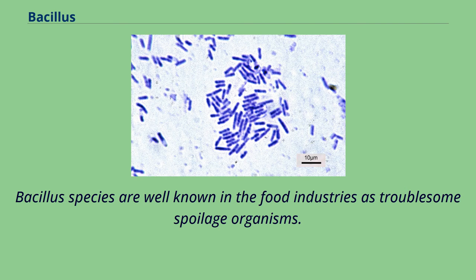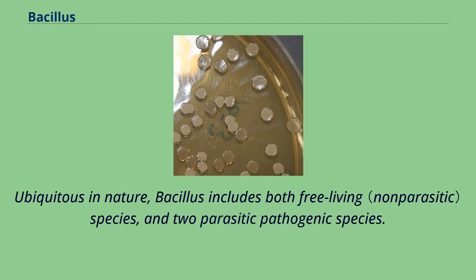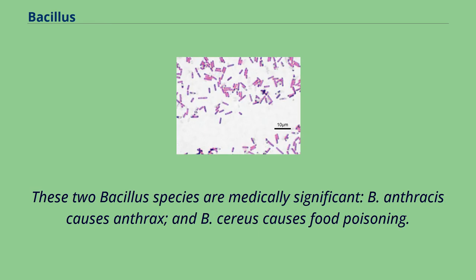Bacillus species are well known in the food industries as troublesome spoilage organisms. Ubiquitous in nature, Bacillus includes both free-living species and two parasitic pathogenic species that are medically significant. B. anthracis causes anthrax, and B. cereus causes food poisoning.